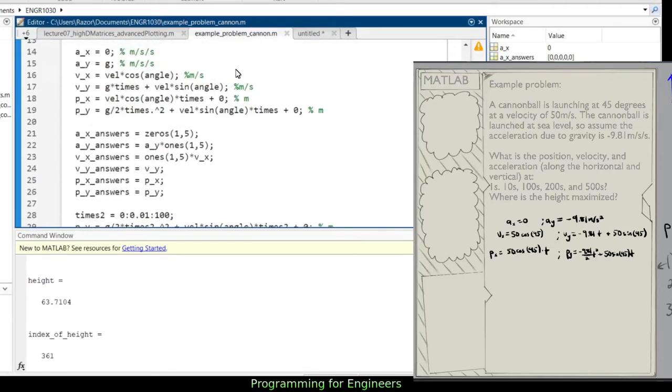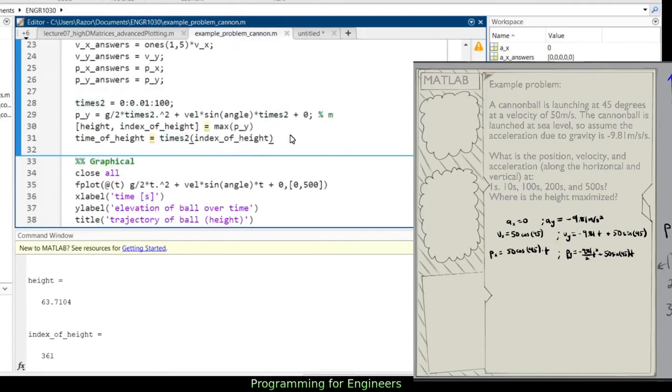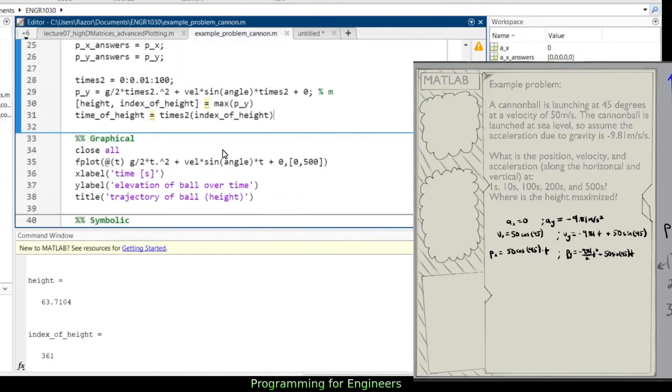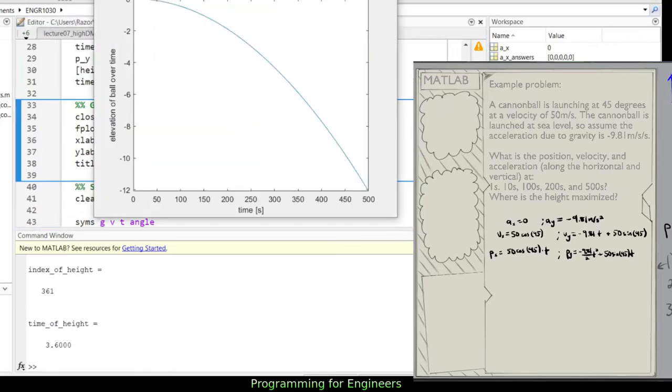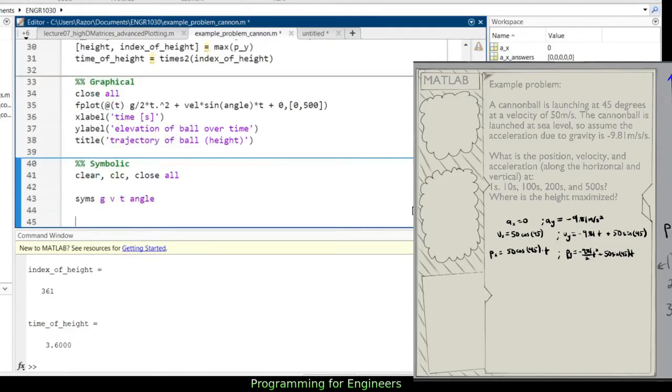So very key when you're working in programming in particular, it's easy to lose track of that. So there we go, we run that again. That's the actual height and that's the time of height. And I run the graphical, trajectory of ball over the height. So that's compensated for the angle being in radians correctly there. So now I've got my syms.